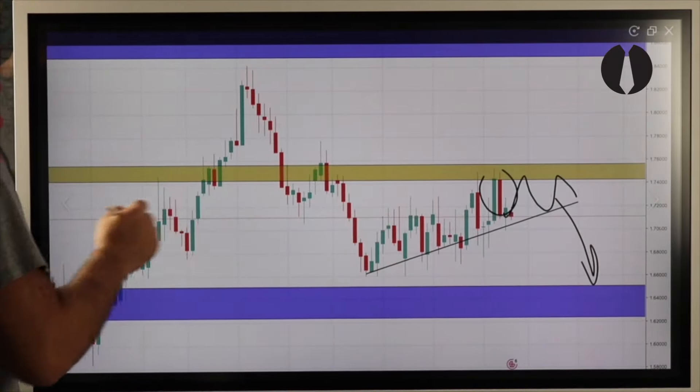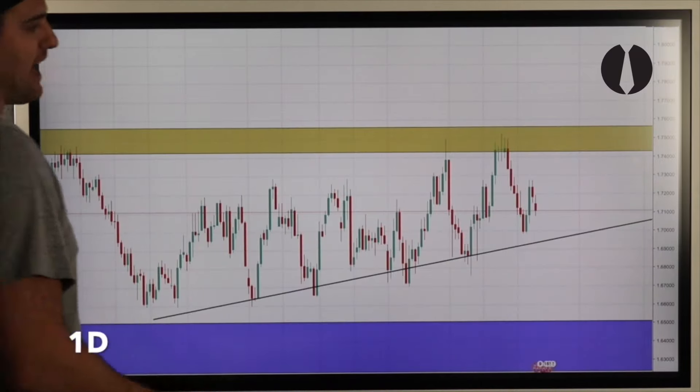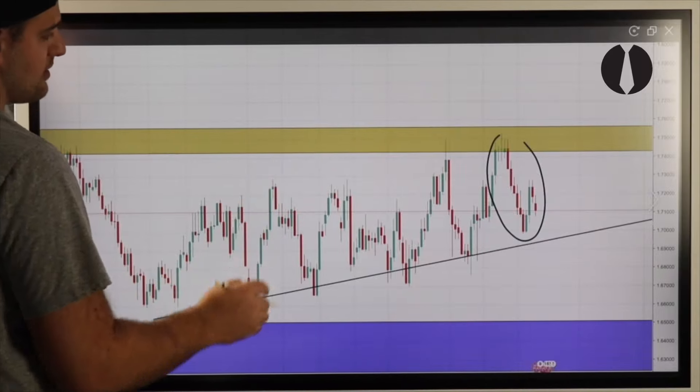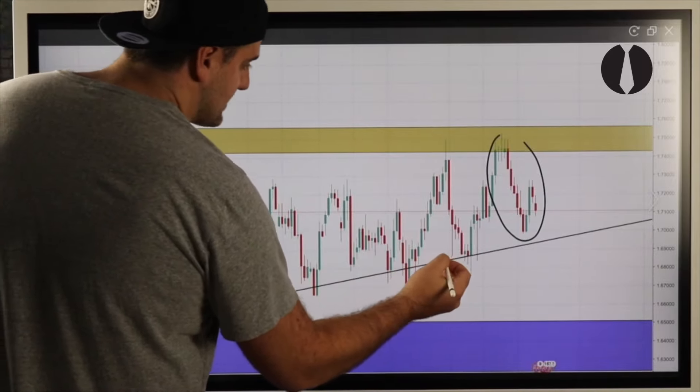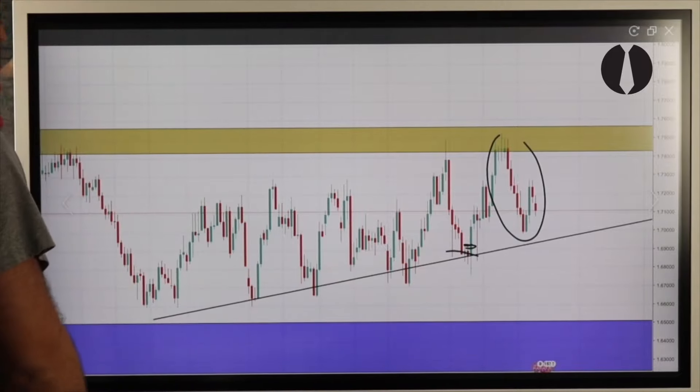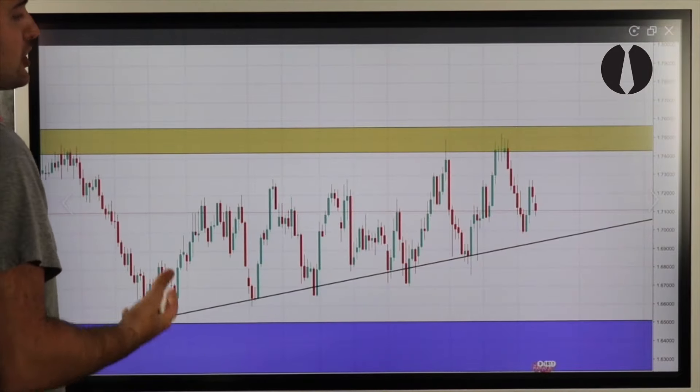This was not a bearish engulfing counter close on the higher timeframe, which means that price has failed to break the uptrend to the downside and also failed to break below previous low. This gives me a good idea that there's still not enough sell pressure for the next move to the downside.